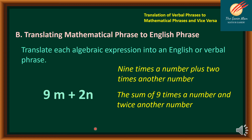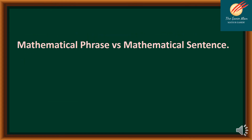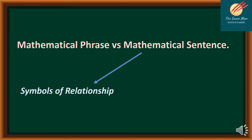Before we move on to translating mathematical sentences into English sentences, let's clarify the difference between a mathematical phrase and a mathematical sentence. A mathematical sentence uses the symbol of relationship, meaning we are comparing the left-hand side and the right-hand side — using symbols such as equal, not equal, greater than, less than, less than or equal to, or greater than or equal to. That is the main difference between a mathematical phrase and a mathematical sentence.